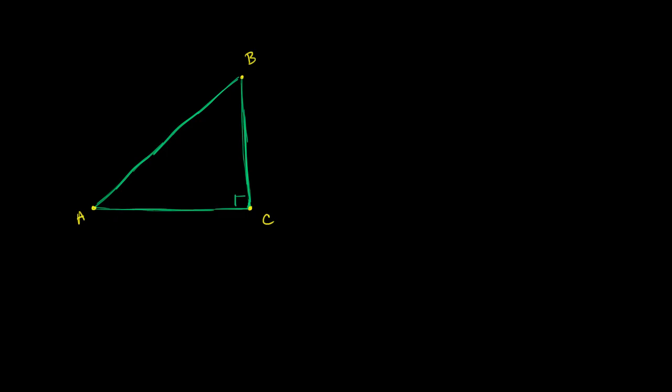What I want to explore in this video is the relationship between the sine of one of these angles and the cosine of the other — the cosine of one of these angles and the sine of the other. So let's say that this angle, angle A, is equal to theta. If its measure is equal to theta degrees, what is the measure of angle B going to be?